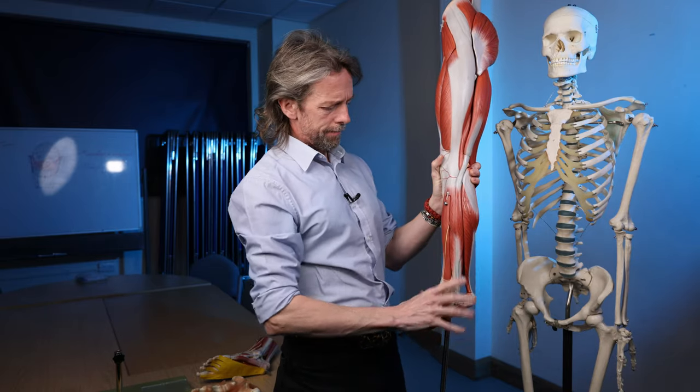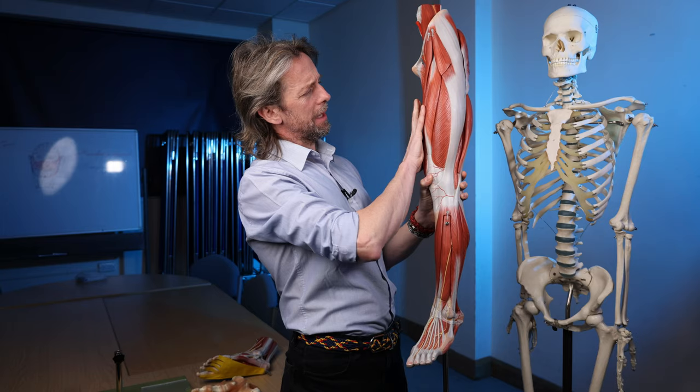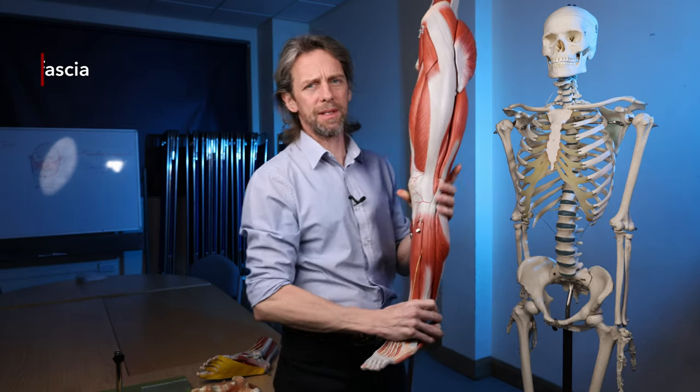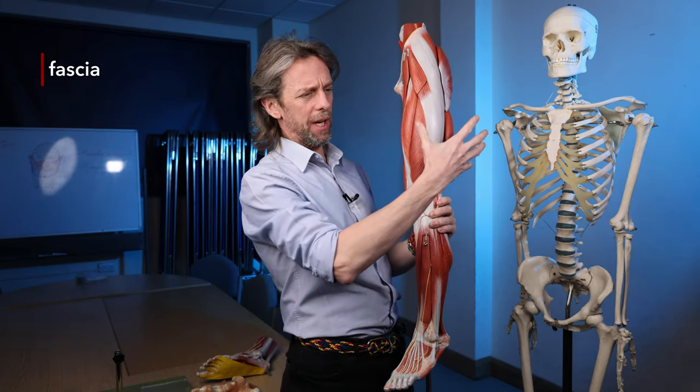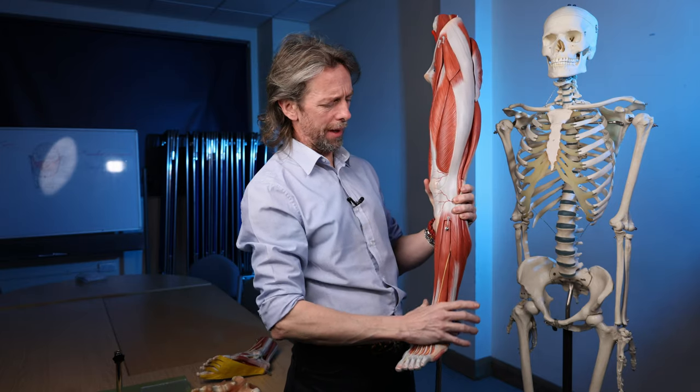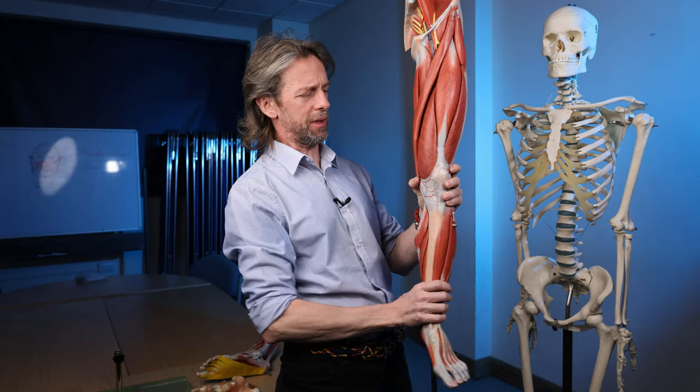The lower limb, like much of the body, is surrounded by fascia. Fascia is a connective tissue sheet and it gets quite thick in the lower limb, probably because of the size of the muscles, the size of the limb, the forces involved.